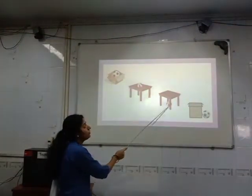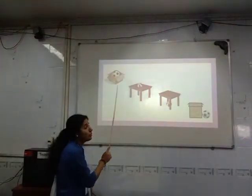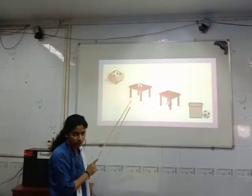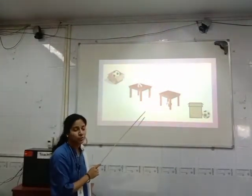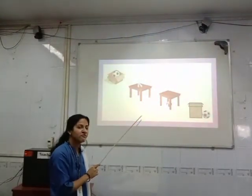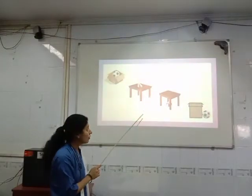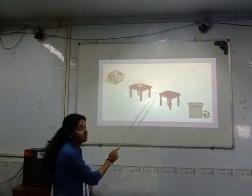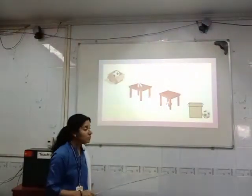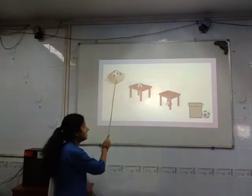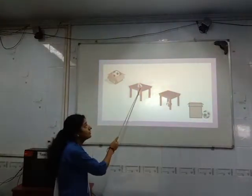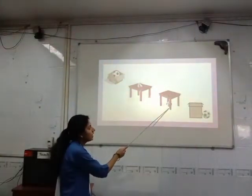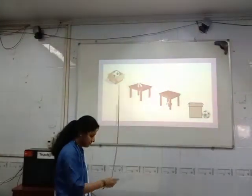So in all these four pictures, the ball is common. But their position is the same? No, their position is different. So where do we find the ball? We find the ball in different positions: in, on, under and near.